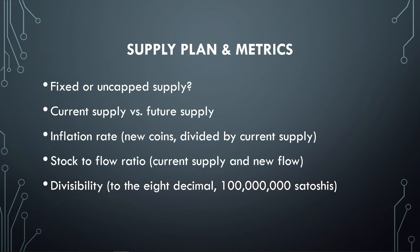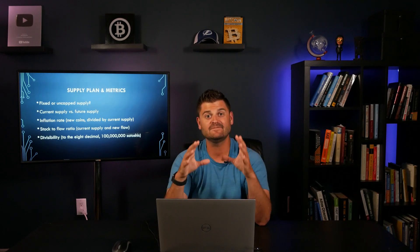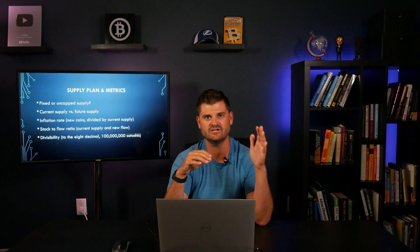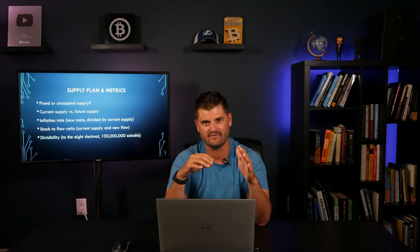The next thing to think about with the supply plan is how divisible is the cryptocurrency you're looking at. In Bitcoin's case, it's divisible down to the eighth decimal place — basically 100 million satoshis. So you can tell friends and family that you don't have to buy a whole Bitcoin; you can buy a fraction of a fraction of a Bitcoin.